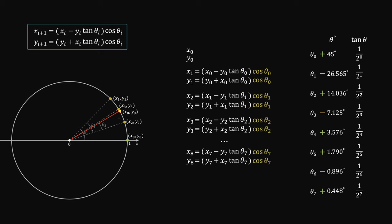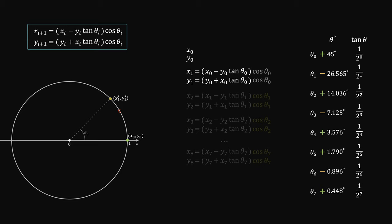There's a trick. We can skip the cosine multiplications during each rotation. Say we skip the first multiplication. What will happen then?